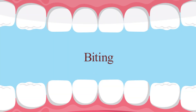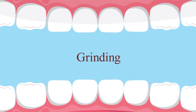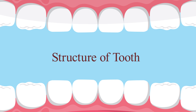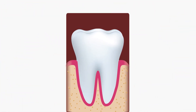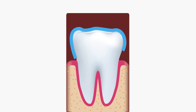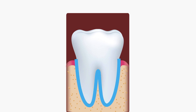Teeth help in biting, chewing, and grinding the food we eat. To understand teeth, let us begin with the structure of a typical tooth. A tooth consists of two main regions: one is above the gum surface and the other is present below it.